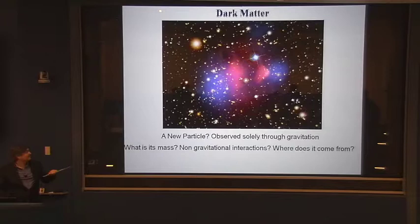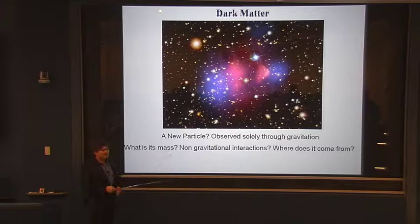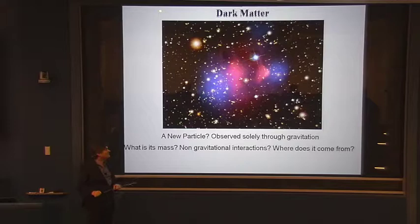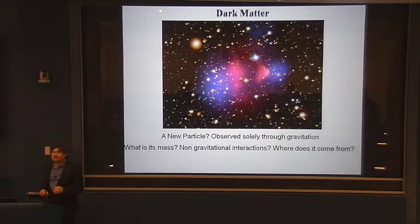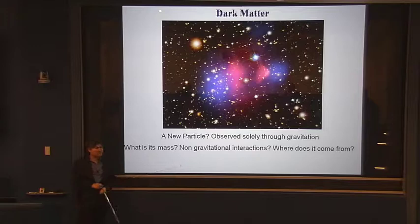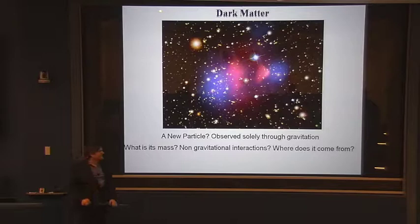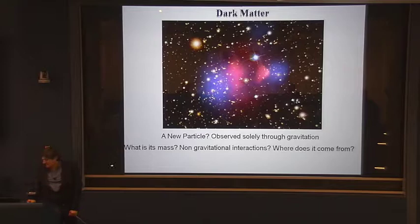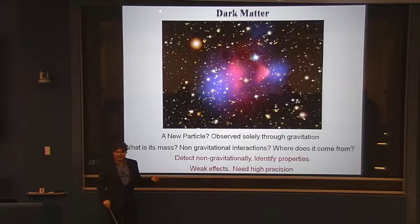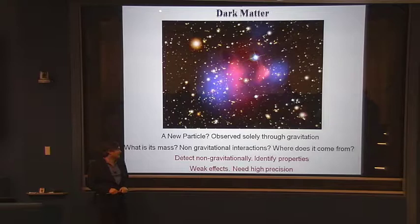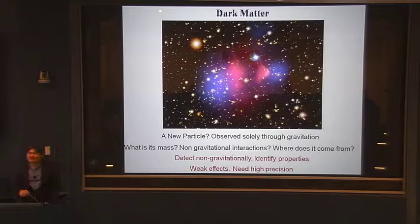Now the big question is, what could it be? So this is, again, the picture I've already shown. So it might be a new particle. I'm going to focus on dark matter for a while and come back to dark energy at the end. It's been observed solely through the gravitational interaction with normal matter. We don't know what its mass is. We don't know whether it has any interactions in addition to gravity. It could. It could not. And the big question is, how can we find out? And the simple answer might be, we have to detect it in any non-gravitational way. Then we would know what the mass is, that it has non-gravitational interactions and so on. But these effects, if they exist at all, must be very weak. Otherwise, we would have seen them already. And therefore, we need to find very sensitive experiments.